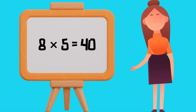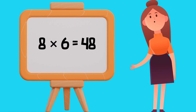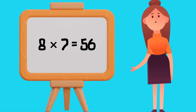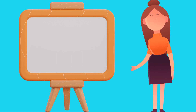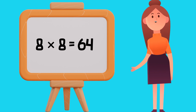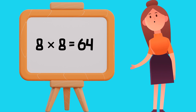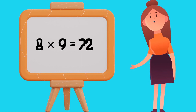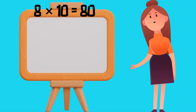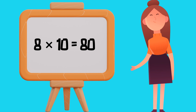Table of 8: 8 1's are 8, 8 2's are 16, 8 3's are 24, 8 4's are 32, 8 5's are 40, 8 6's are 48, 8 7's are 56, 8 8's are 64, 8 9's are 72, 8 10's are 80.